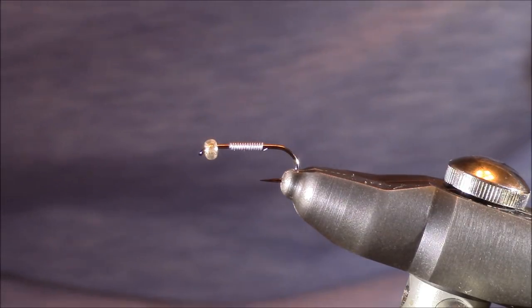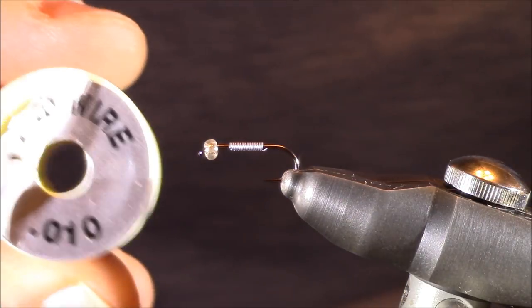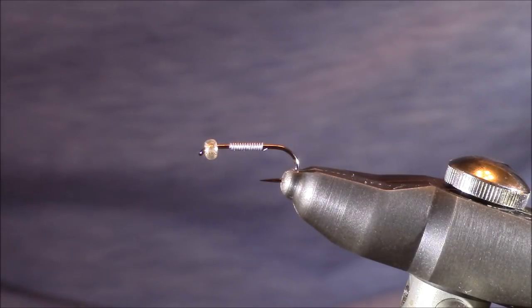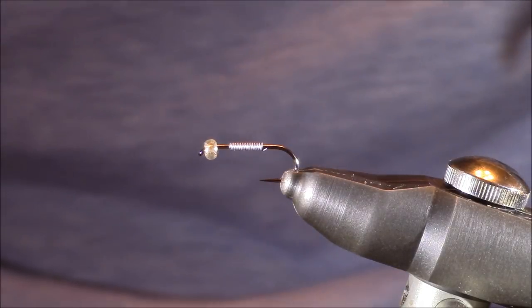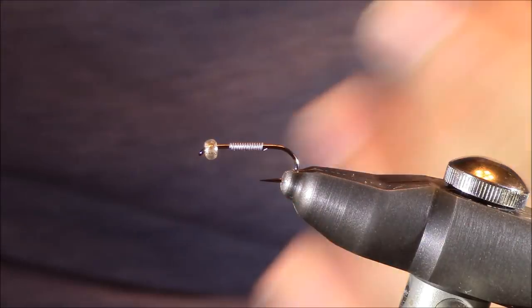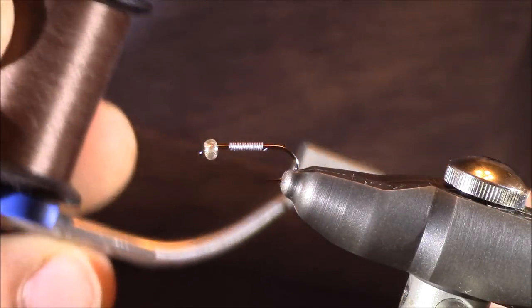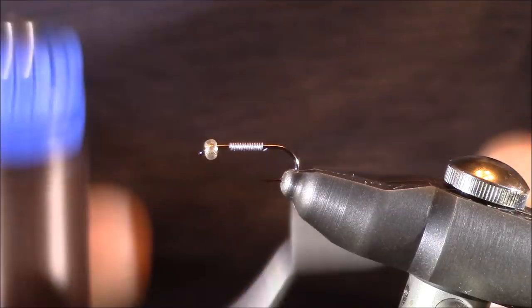I've already added a lead wire body. The size is 0.010. I made around 10 to 12 wraps of that, and then next, I'm going to start with my thread. I'm going to be using size 8-aught brown unithread, and this is a really important step.